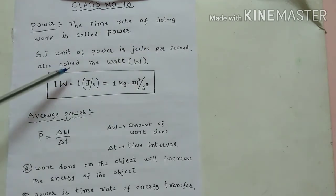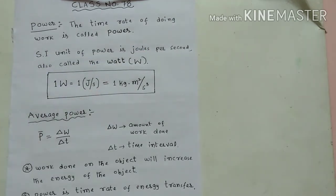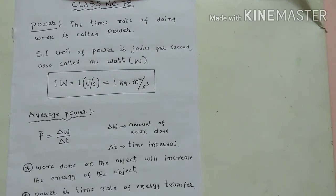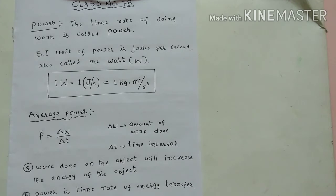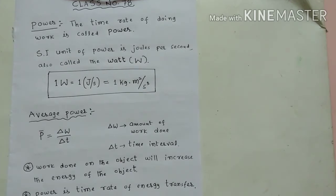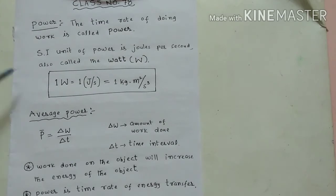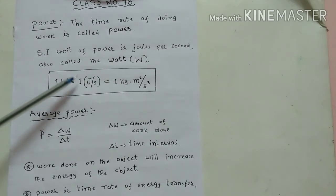James Watt, who invented steam engine. The name of James Watt, we are using this watt as a unit for power. One watt equal to one joule per second, that is one kg m² per second cube.